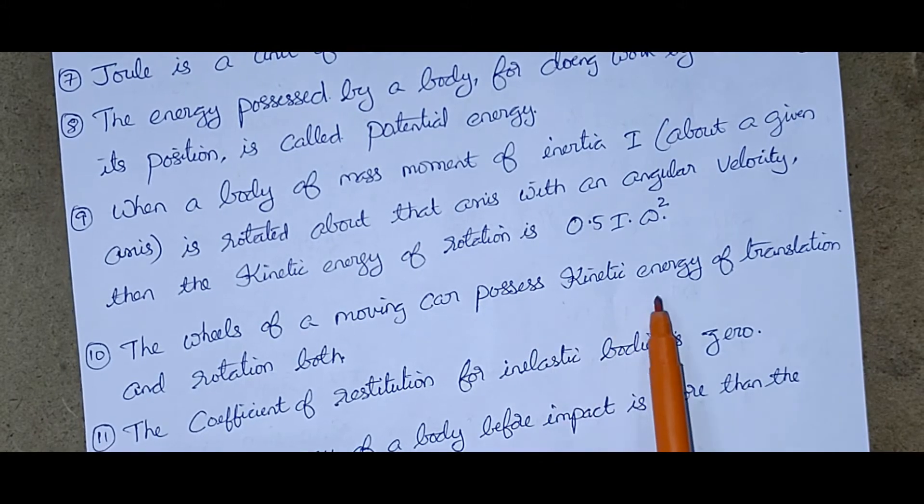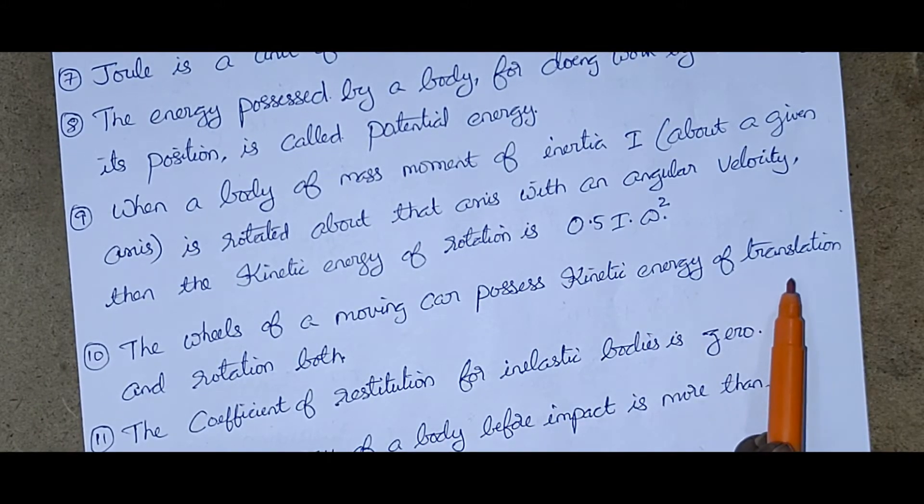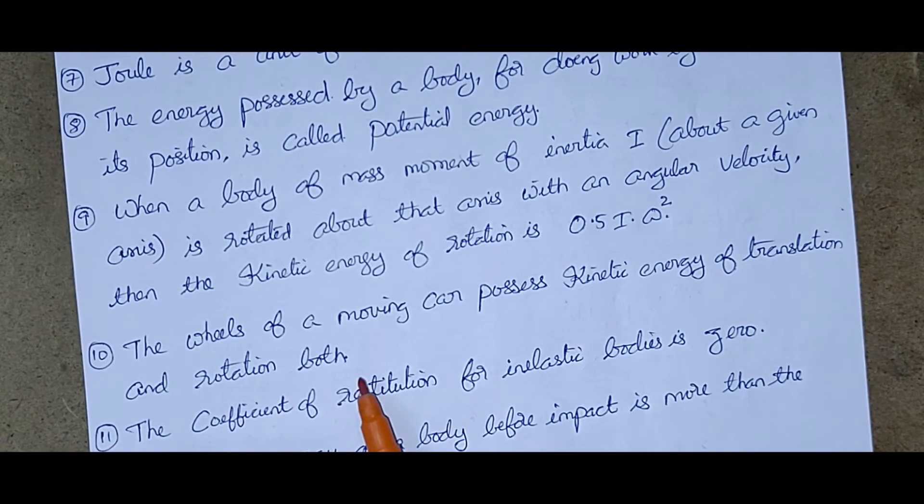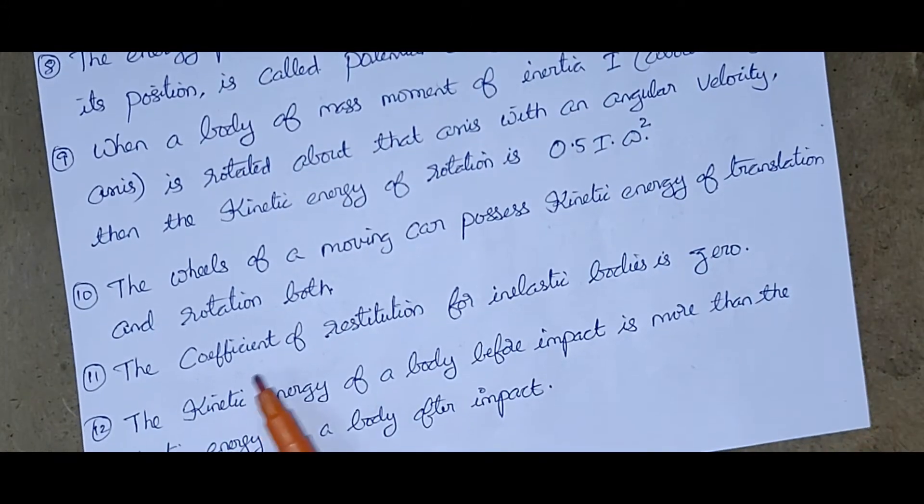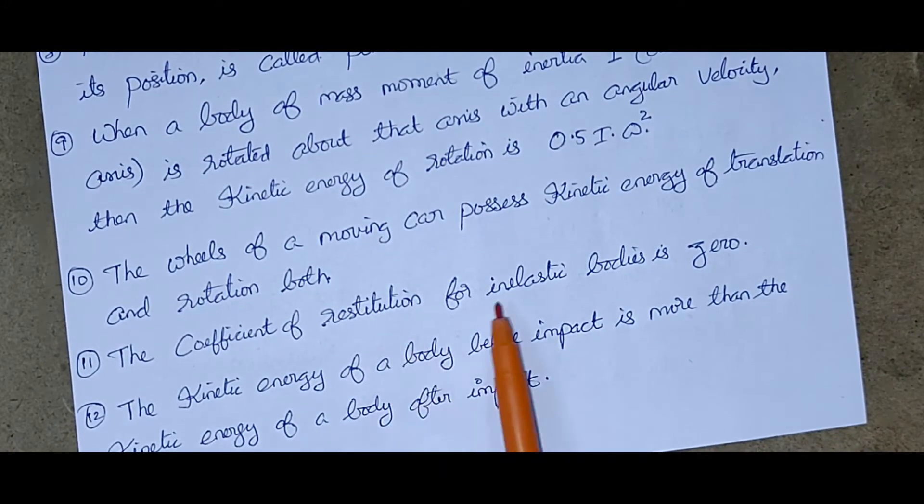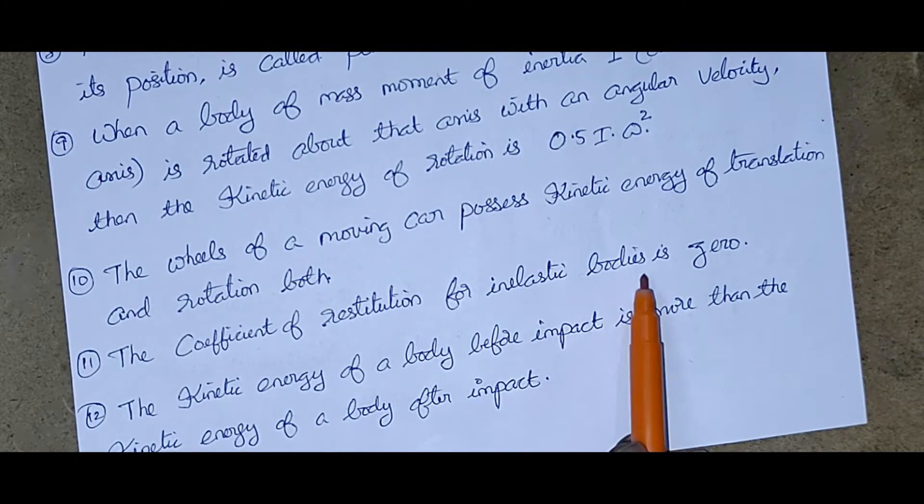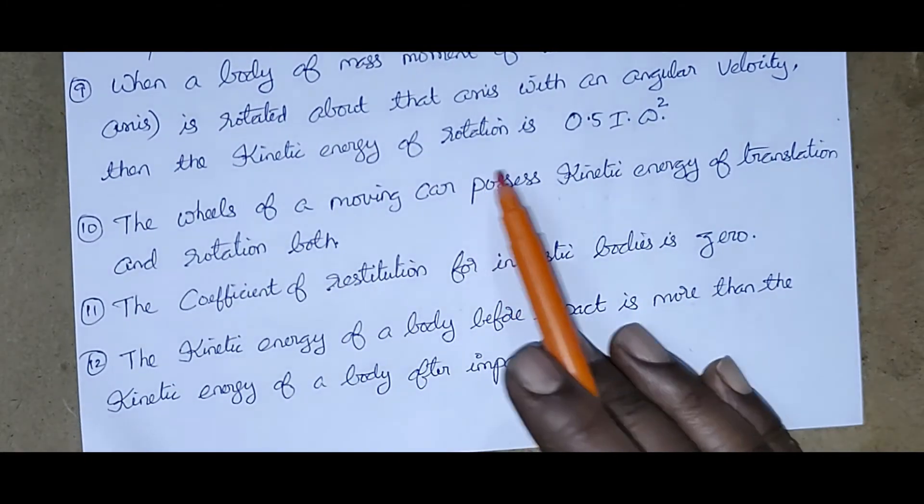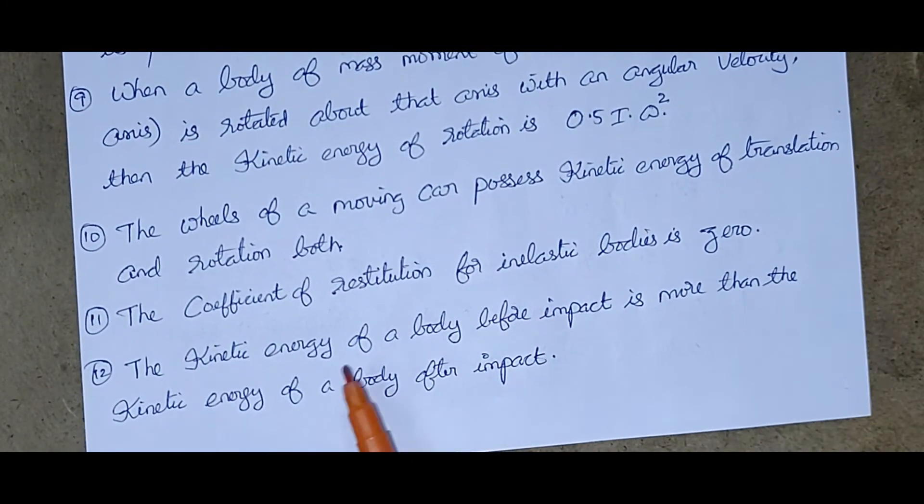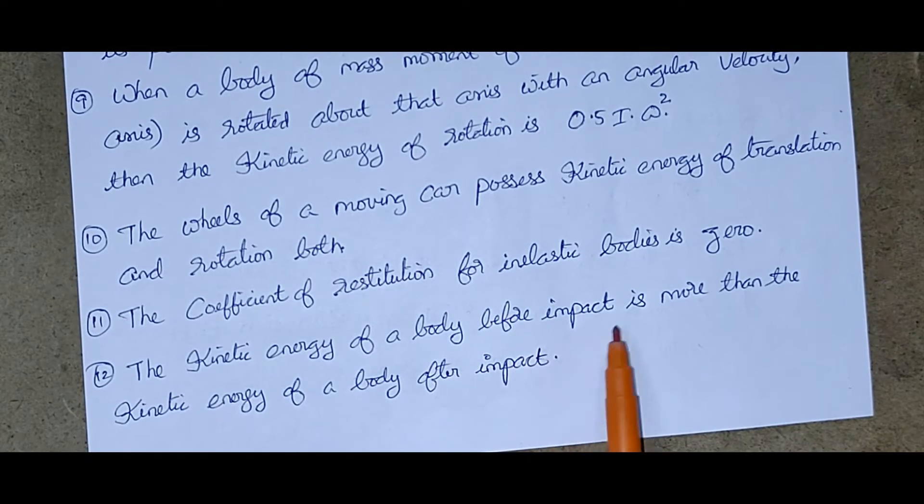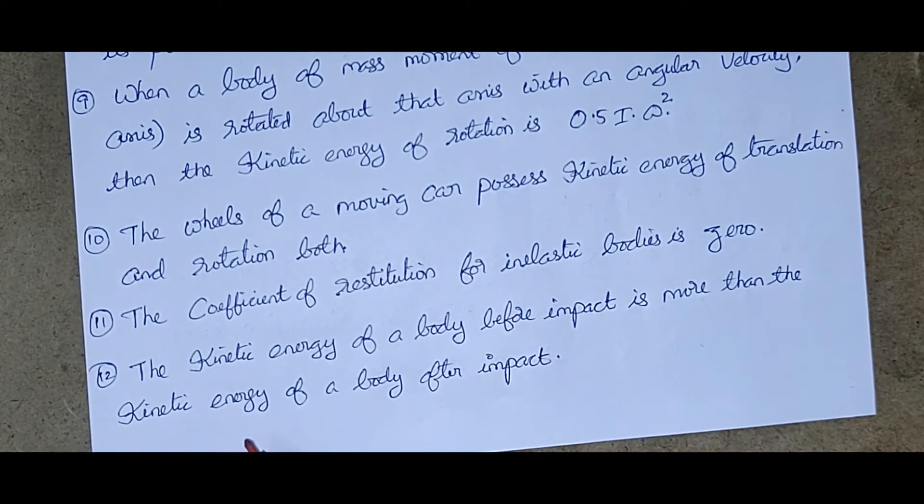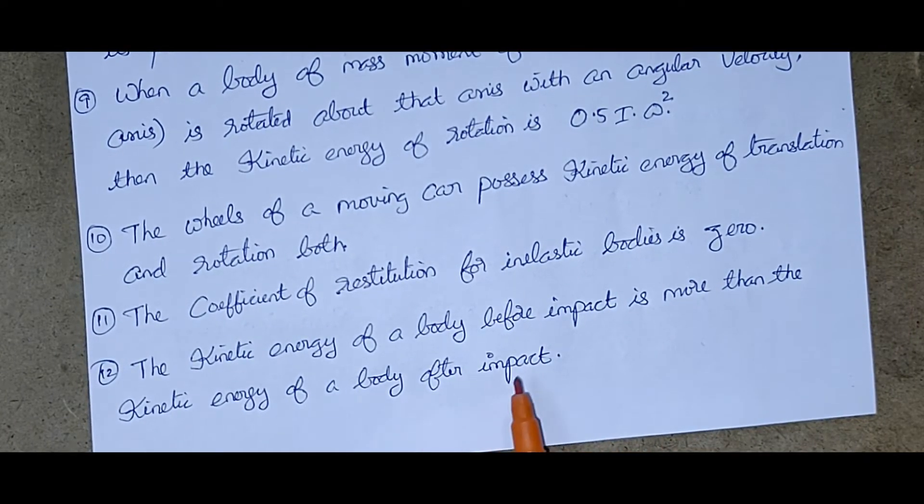The wheels of a moving car possess kinetic energy of translation and rotation both. The coefficient of restitution for inelastic bodies is zero. The kinetic energy of a body before impact is more than the kinetic energy of a body after impact. Okay, now we will continue.